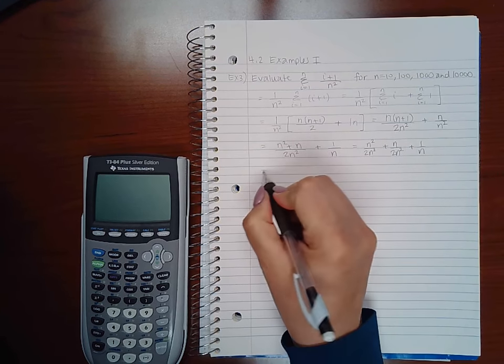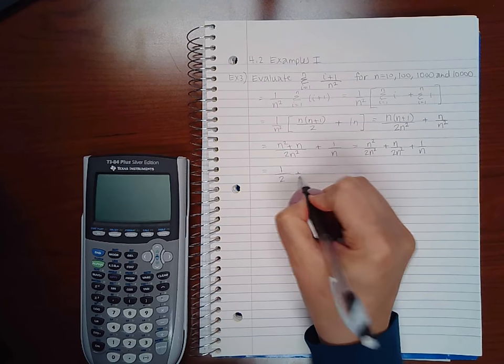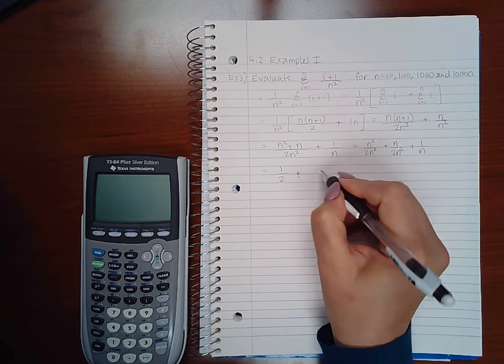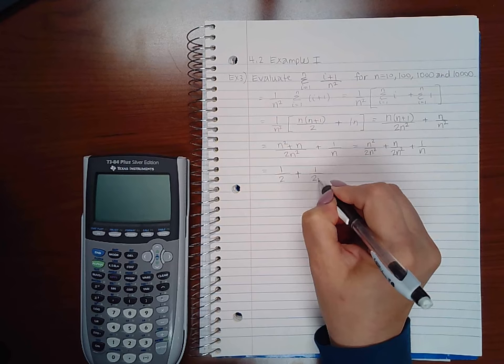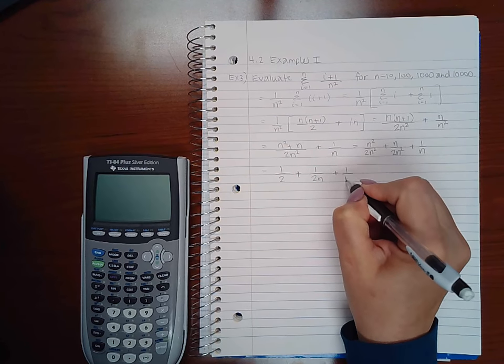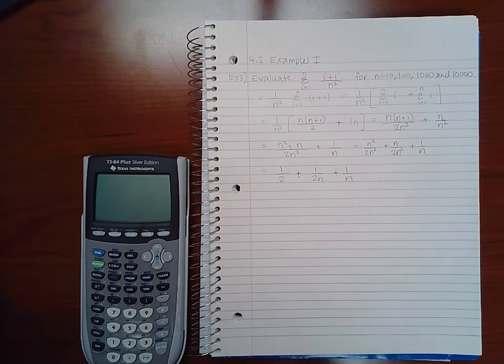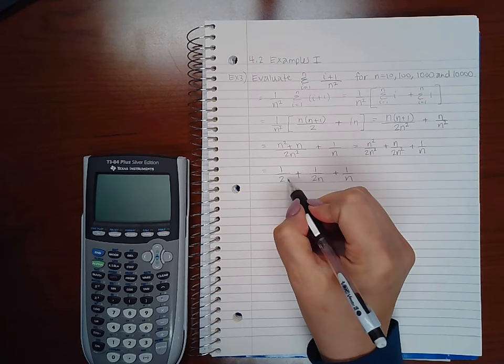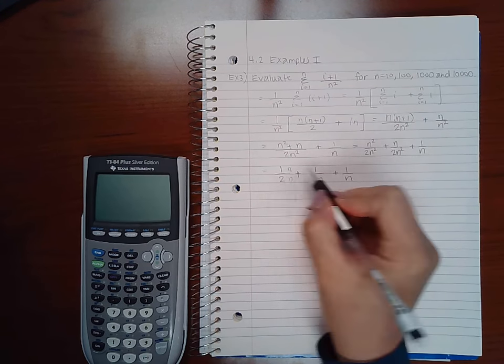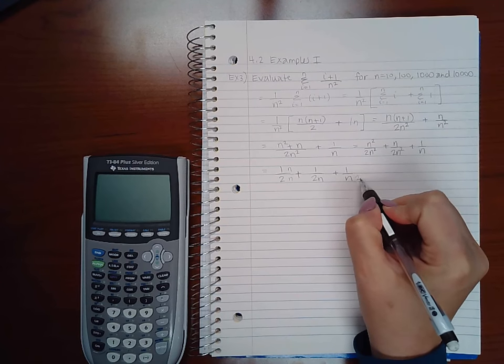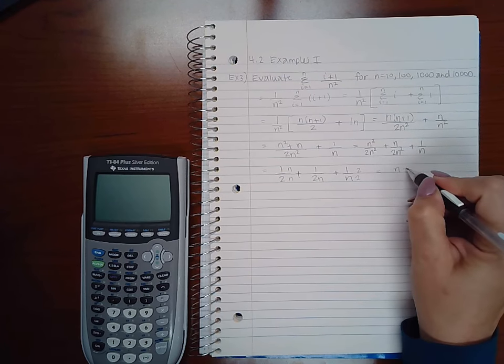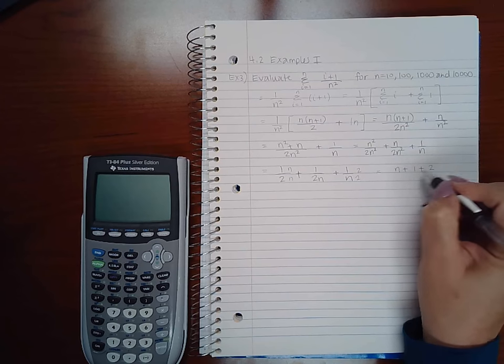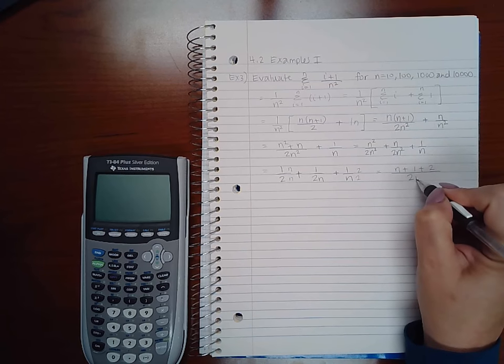So if I reduce this fraction, I get 1 over 2n. If I reduce this fraction, I get 1 over 2n. And if I want to have a common denominator, let's see what we would need. We would need to multiply this one by n and n. We would need to multiply this fraction by 2 and 2. So that would give me n plus 1 plus 2 all over 2n.